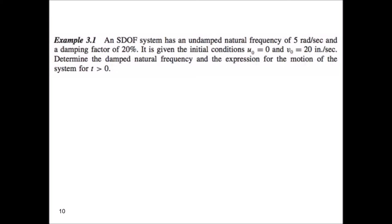Let's take a look at example problem 3.1. In this problem, we have a single degree of freedom system that has an undamped natural frequency of 5 radians per second and a damping factor of 20%. The initial conditions are U0 equal to 0 and V0 equal to 20 inches per second. They ask us to determine the damped natural frequency and the expression for the motion of the system for time greater than 0.